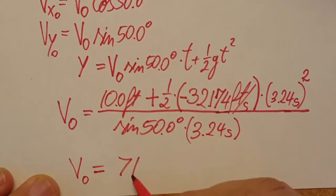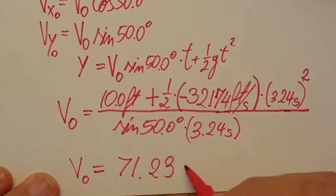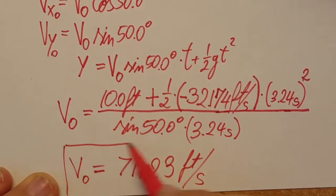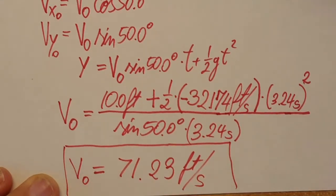All right now it's calculator time. We're gonna plug it in into the calculator and we're gonna find a value of 71.23 feet per second. There you go we found the answer for our first question.